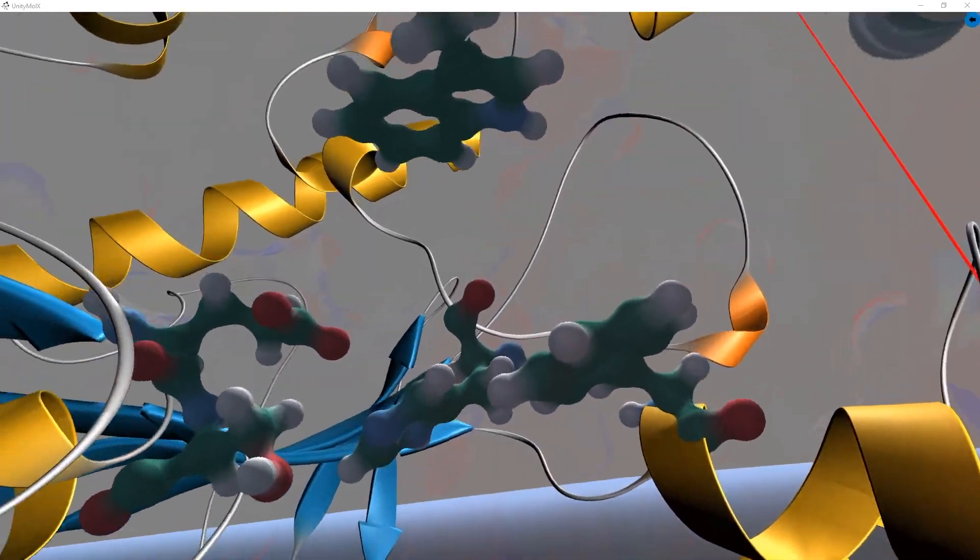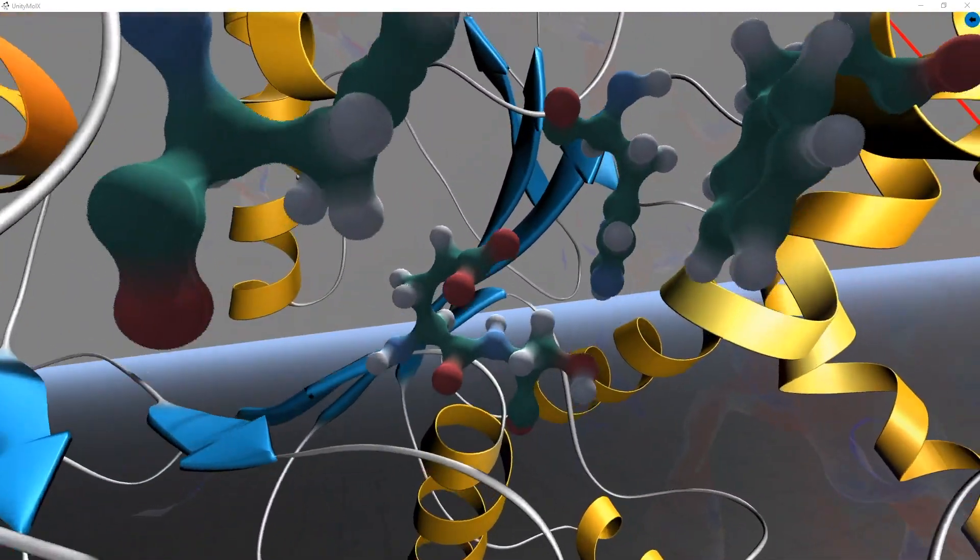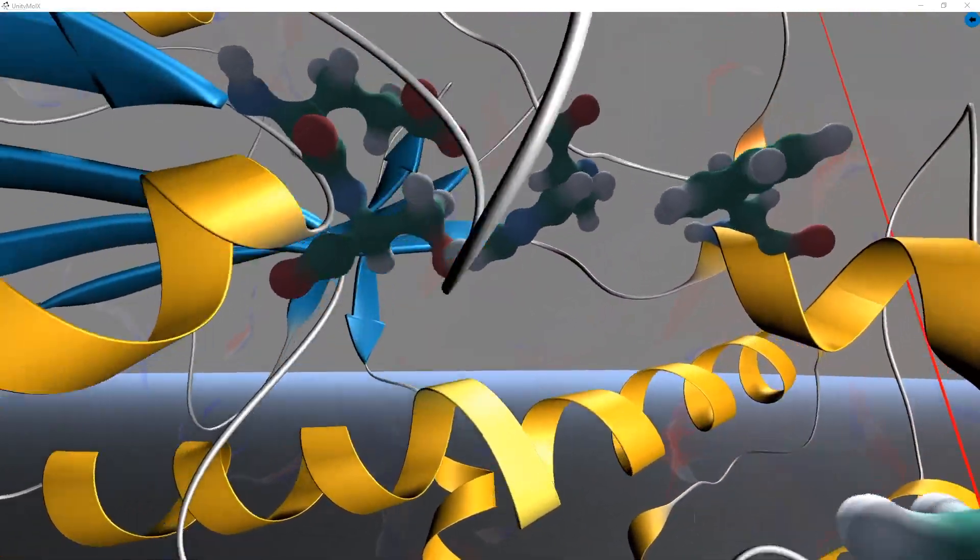Here we can see this giant pocket of space where the substrate will lie. So let's back out of the enzyme and grab our substrate, acetylcholine.